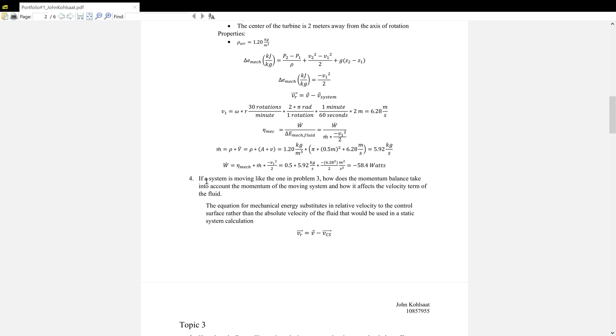Now, for the conceptual question, it's kind of based on the first question, which is why I put it second. But it's essentially, if the system is moving, how does the momentum balance take into account the moving system and how does it modify the velocity term? And so this is essentially by this equation, where the relative velocity is equal to the absolute velocity of the fluid minus the velocity of the system.